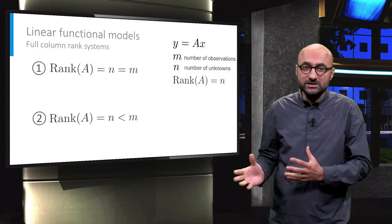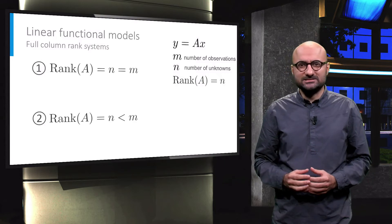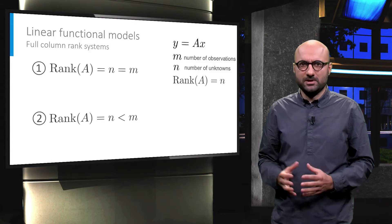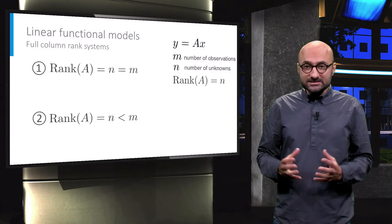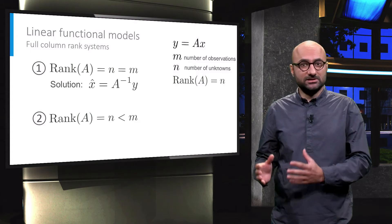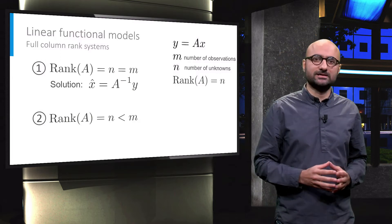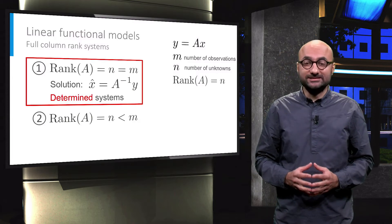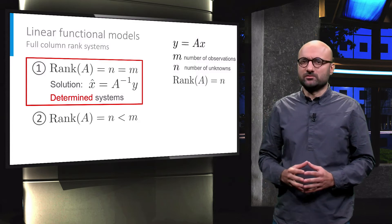These systems are consistent as the rank of A is equal to m, and a unique solution for them exists. In these systems the solution can be simply computed by multiplication of the inverse of matrix A by the observation vector y. These systems are called determined systems.